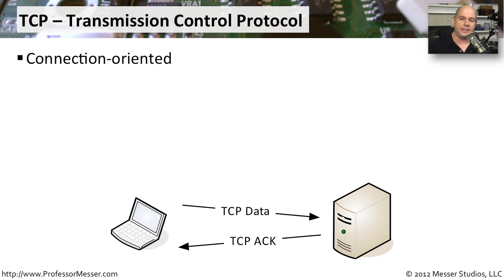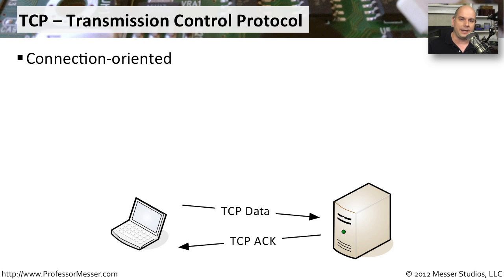One interesting characteristic of TCP is that it is connection-oriented. Before you can send any TCP information from one station to the other, both of those stations have to synchronize themselves and create a connection between them. Once that connection is created, you can then send the traffic. At the end of the connection, there's a teardown process that closes out the connectivity. So it's a very formal process before, during, and after sending data — and this is all contained within TCP.